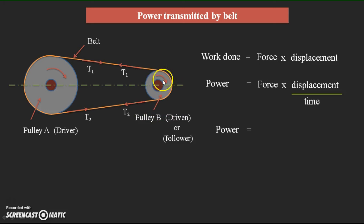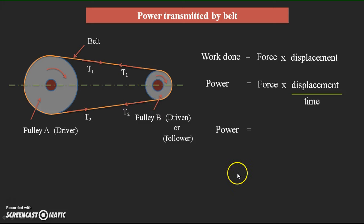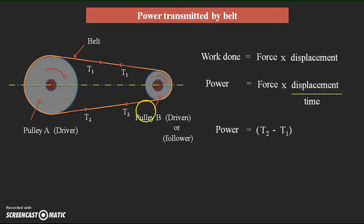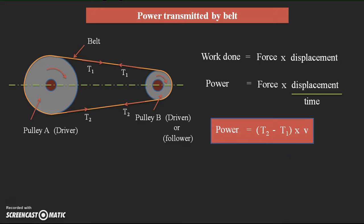Consider the follower as an example. With respect to this follower, the resultant force acting inside the belt is the difference of these two tension forces, because both are acting in opposite directions. So we write the resultant force as T2 minus T1 — larger value minus smaller value. The resultant force is the difference of these two tensions. Therefore, power equals (T2 − T1) × velocity of the belt. Remember this formula.